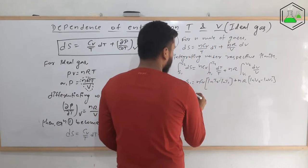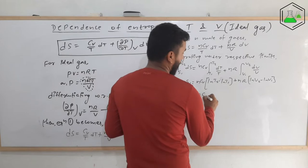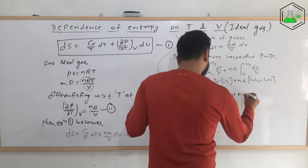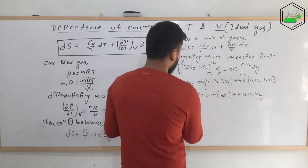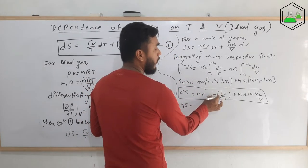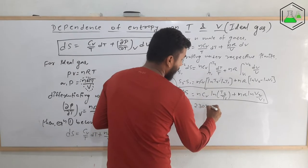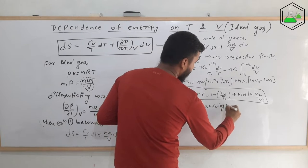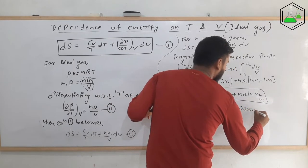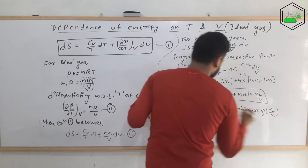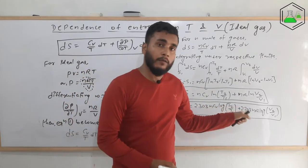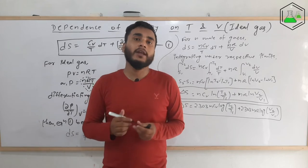This is a simple mathematical formula. We can write ΔS equals nCv·ln(T2/T1) plus nR·ln(V2/V1). This is the formula for ideal gas. Similarly, this formula can also be written in log form: ΔS equals 2.303·nCv·log(T2/T1) plus 2.303·nR·log(V2/V1). These two formulas show the dependence of entropy with temperature and volume for ideal gas and are used in numerical problems.